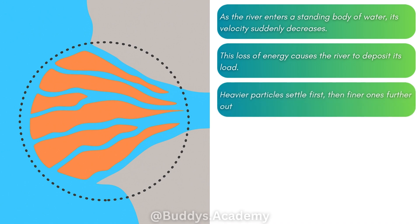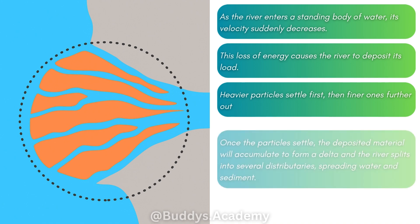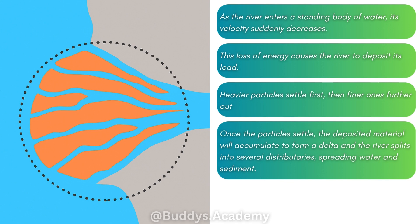Your heavy particles are going to settle first and the finer ones are going to be carried further out. Now, when your river enters the sea, the saline conditions — meaning the high concentration of dissolved salts in the water — are going to cause your fine clay particles to stick together, making the particles much larger and heavier, causing them to sink. Once your particles settle, the deposited material will then accumulate to form a delta.